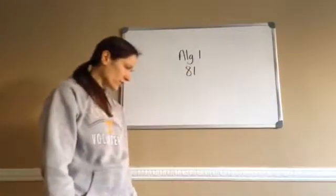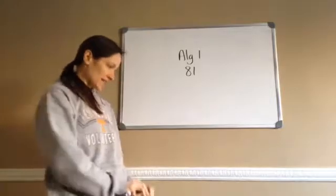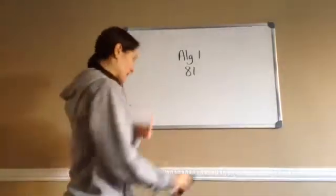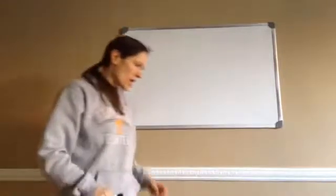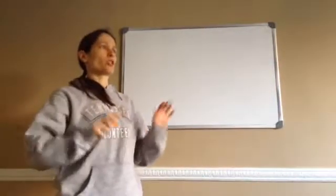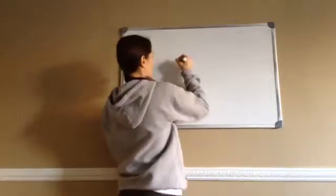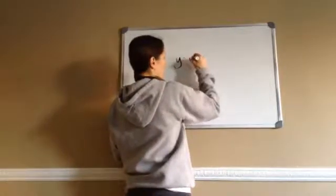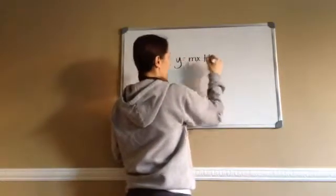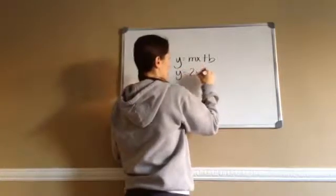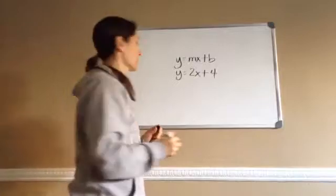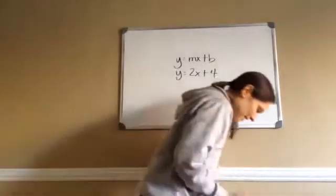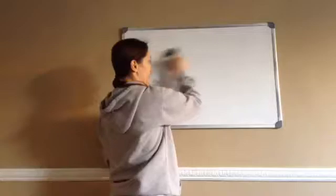Algebra 1, lesson E1. This is on graphical solutions, inconsistent equations, and dependent equations. We just learned how to graph when you see something like y equals mx plus b — for example, y equals 2x plus 4. We're going to be doing that today, but there are going to be three different types of graphs.